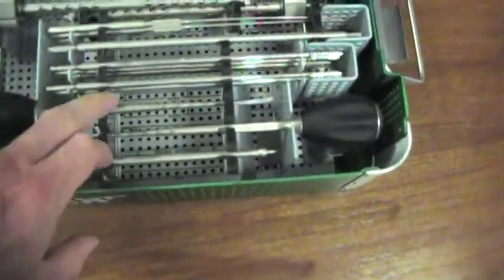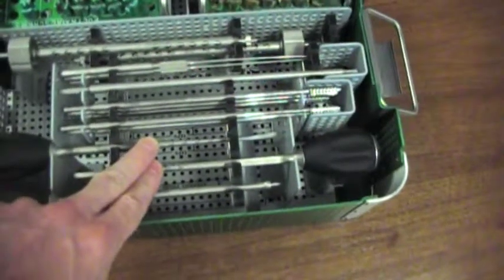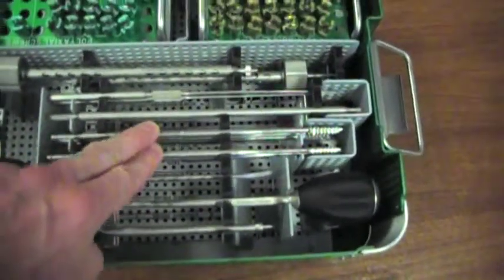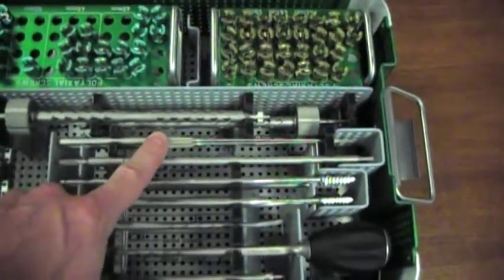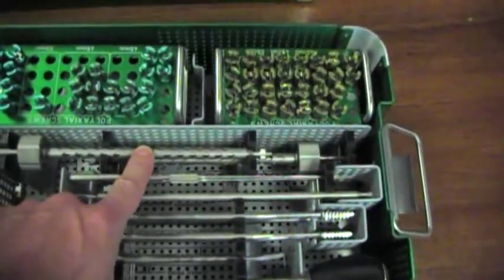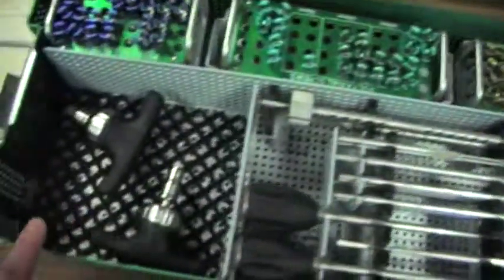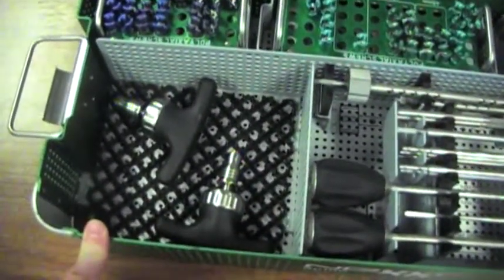Contents in here include awl, two probes straight and curved, taps, in situ driver, sounders or feelers, screw inserters, and handles. Pick the handles you want to use.